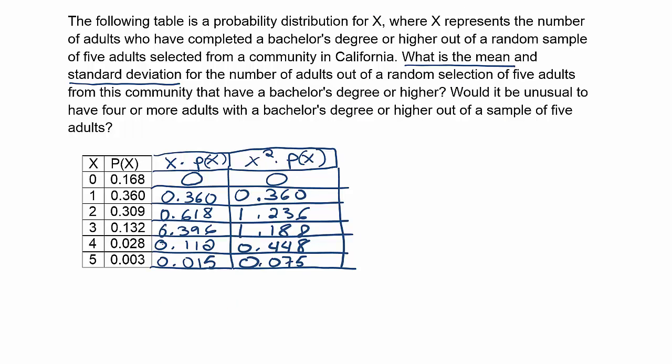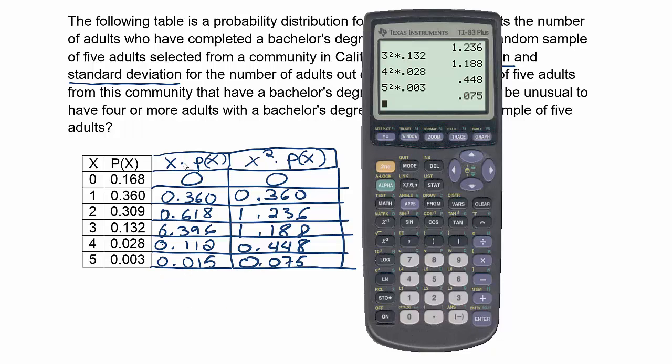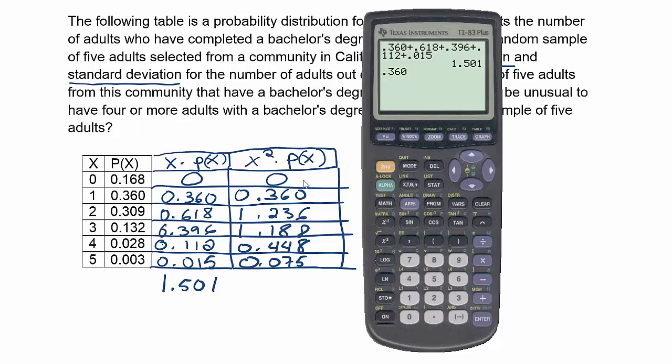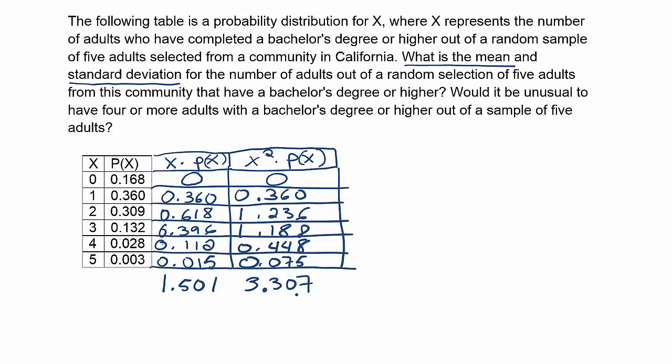Okay, now, from here, what we're going to do is add all of these values together in the column that says x times P(x) to get a total. We'll do the same for the x squared times P(x). We'll add all these to get a total. So let's do 0.360 plus 0.618 plus 0.396 plus 0.112 plus 0.015. And we get 1.501. And then we'll have 0.360 plus 1.236 plus 1.188 plus 0.448 plus 0.075. So we get 3.307.